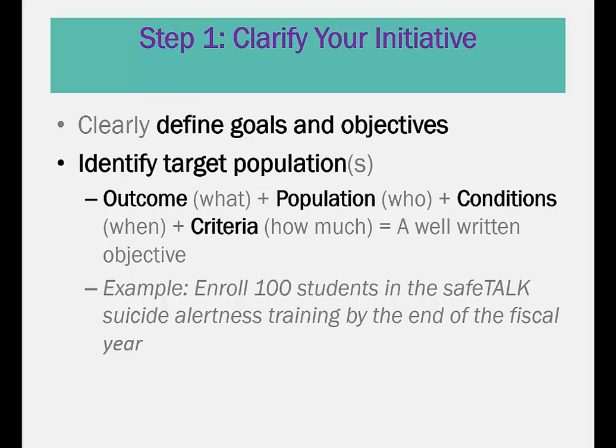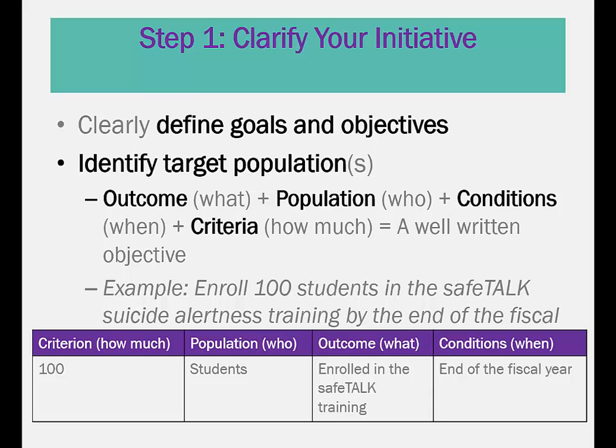Consider the following example that covers all four elements of a successful objective: Enroll 100 students in the Safe Talk Suicide Alertness training by the end of the fiscal year. Think about an initiative that you have wanted to implement. Use the blank template below to help clearly define your initiative's goals and objectives. Once completed, you can print a copy for your reference by pressing the printer icon in the top right corner.